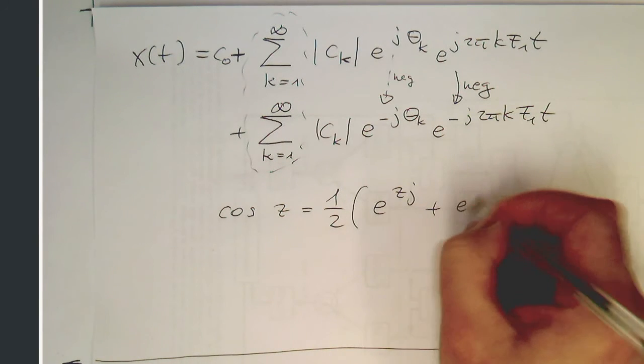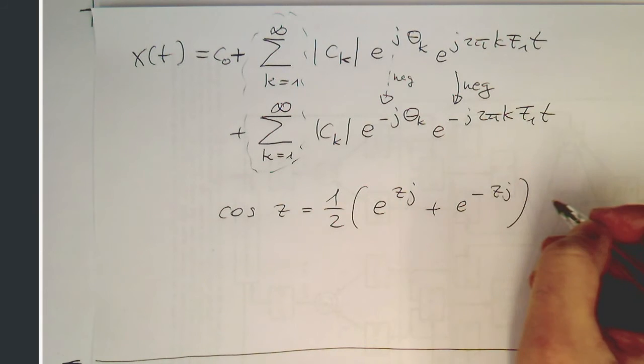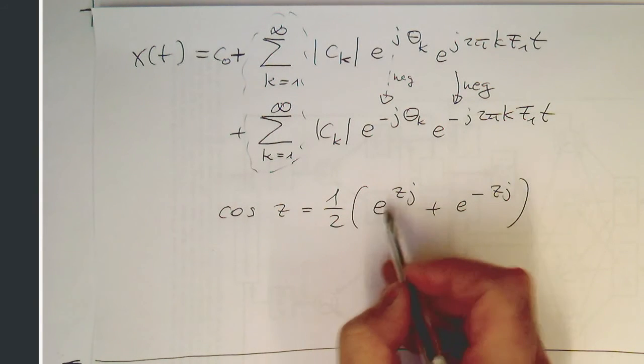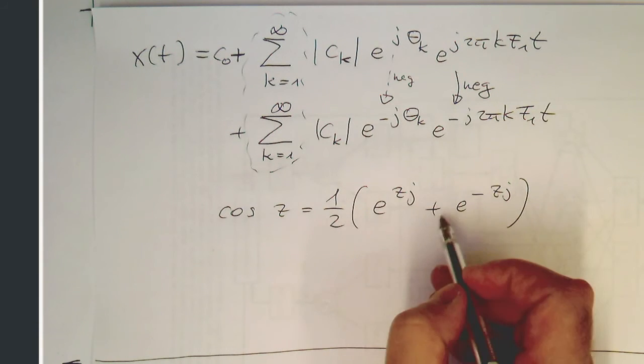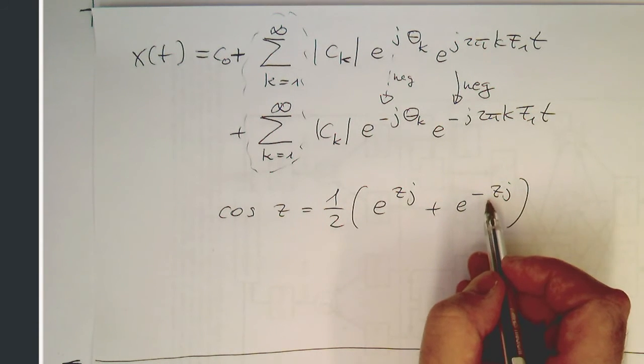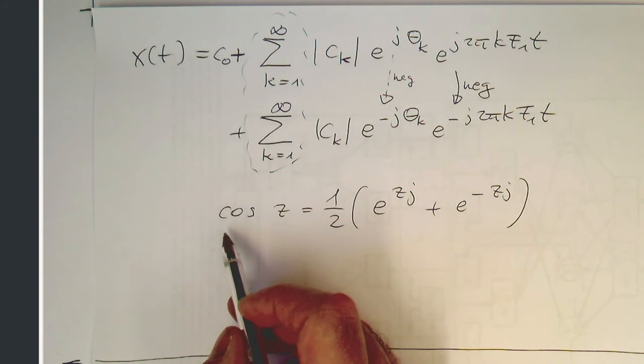So if we have something like e^{zj} and then e^{-zj}, so if we have a positive complex exponential and then adding the same but with a negative sign here, then this is a cosine, or in this case 2 times the cosine.